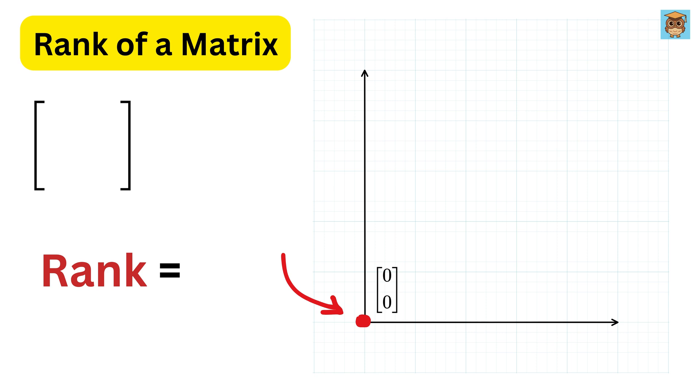And yes, it can even lie on a single point, the origin, when the matrix sends every input to 0. In that case, the output space has no dimension at all, and the rank is 0. That's what happens, for example, with a 0 matrix, where no matter what input you give, the output is always just 0.